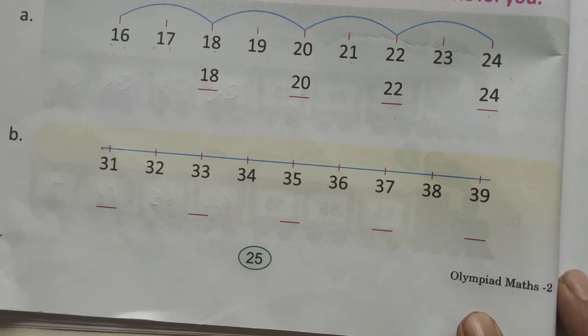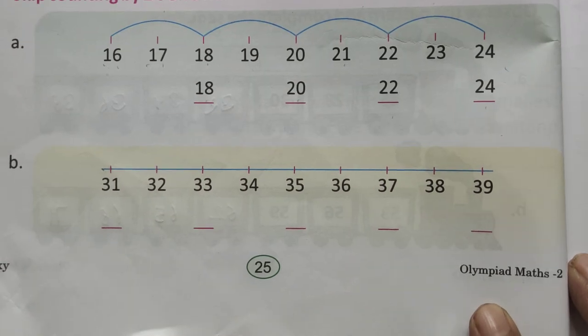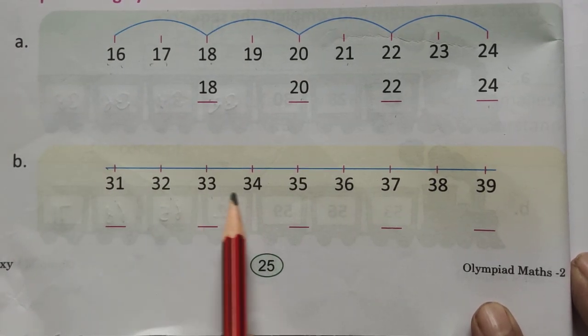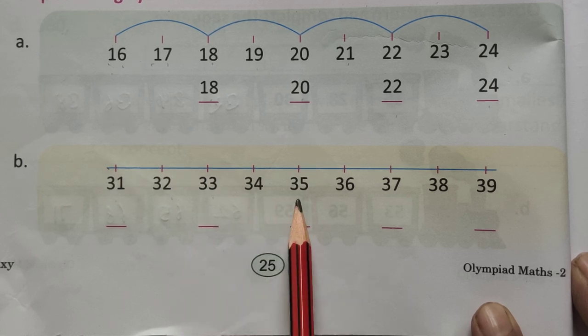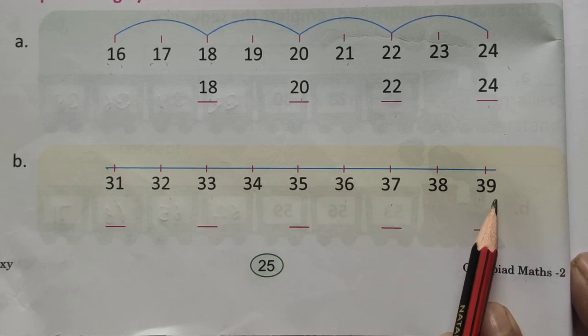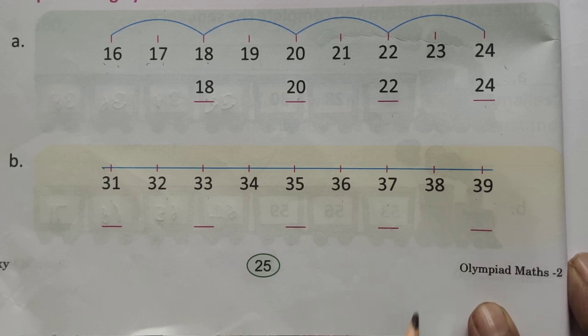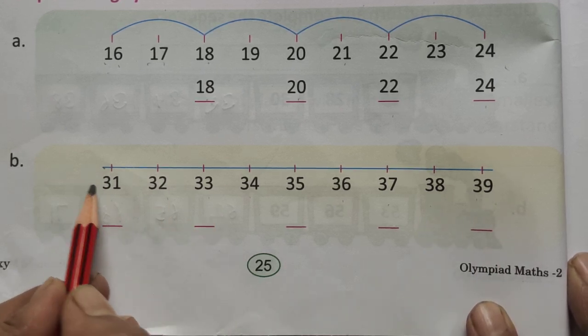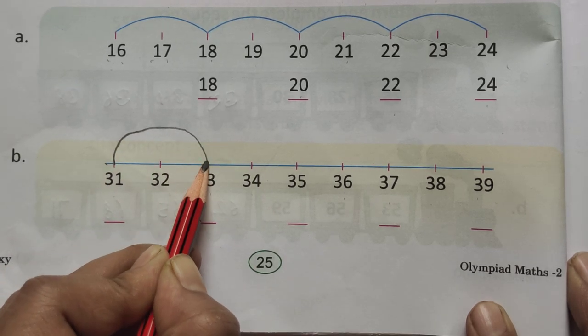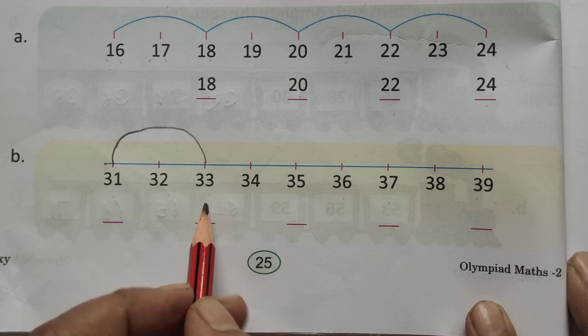Next question is, 31, 32, 33, 34, 35, 36, 37, 38, and 39. Okay? So, skip by 2. 31, to jump, 1 number, and 2 number. Okay?